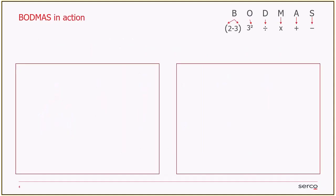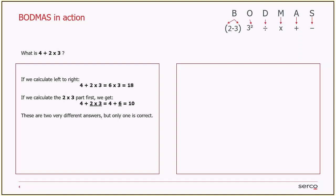So if I work an example: if we add 4 add 2 times 3, a nice straightforward maths calculation. If we went left to right, we do 4 add 2 is 6, times 3 is 18. If we think about BODMAS though, BODMAS says to do the multiplication before we do addition. So we need to do the 2 times 3 before we can do the addition. So 2 times 3 is 6, so we actually have 4 add 6, which equals 10.